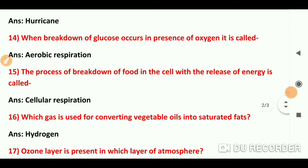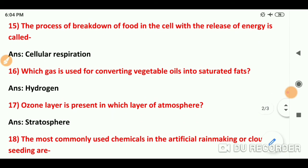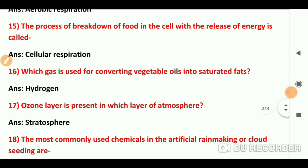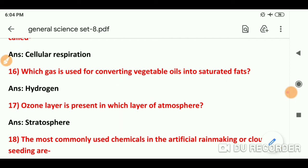Question number 15: The process of breakdown of food in the cell with the release of energy — food का breakdown होता है और energy release होती है, इस process को cellular respiration बोलते हैं. Question number 16: Vegetable oil को saturated fat में बदलने के लिए hydrogen gas का use होता है.